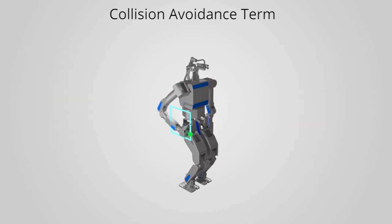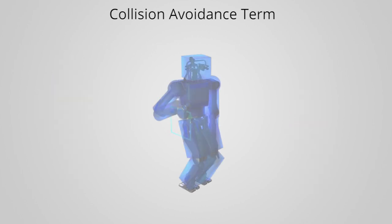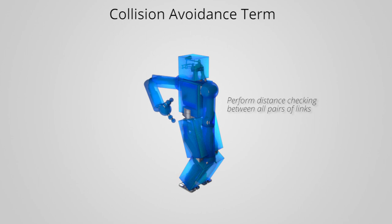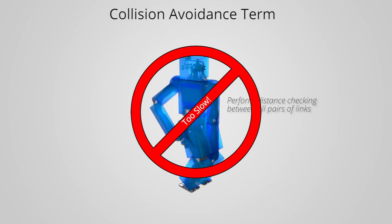We first approximate a distance to a collision state by abstracting the robot's geometry into shape primitives or line segments such that we can more easily perform distance checking between all pairs of links. The resulting function from this procedure is robust, but it is too slow for real-time use.